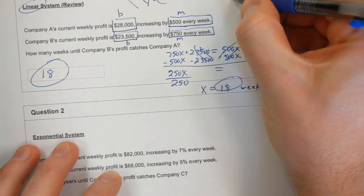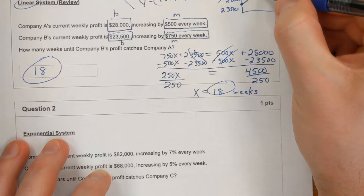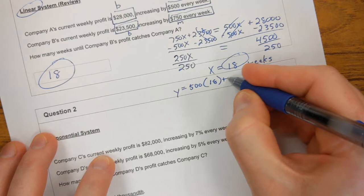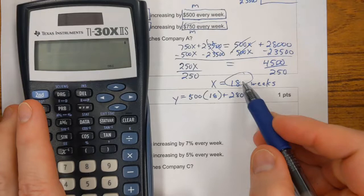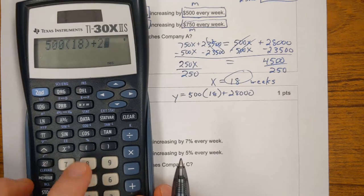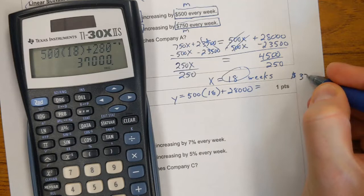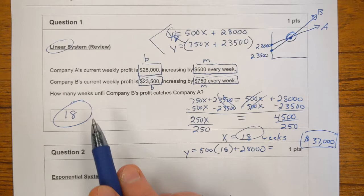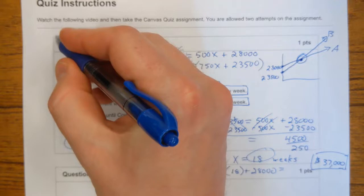All right, so that's a review of linear growth. And I'm not going to make you find the Y value if you wanted to know. So this is $28,000. This is $23,500. If you want to find out what their profit is at this point after 18 weeks, here's how you would do it. You could pick either one of these. If you were curious or if the question ever asked, you could take the 18, plug it back into one of your original formulas. At this point, they're both making $37,000 of profit a week. That's how we would go back and solve for Y. This particular question, we didn't need to, though. It just wanted the X value, the 18 weeks.